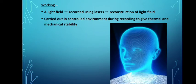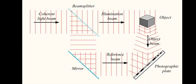The working of holograms are carried out in a controlled environment during recording to give thermal and mechanical stability. It is bouncing of the object mixed with laser beams thus forming an interference pattern and forms a cross-hatch pattern. When waves meet each other, this pattern is introduced into a photographic chemical that records it.